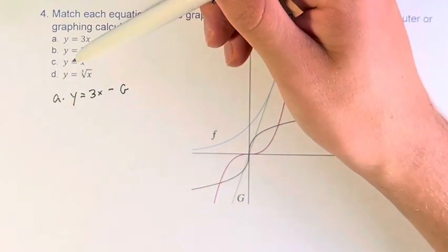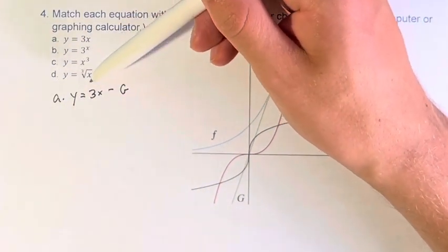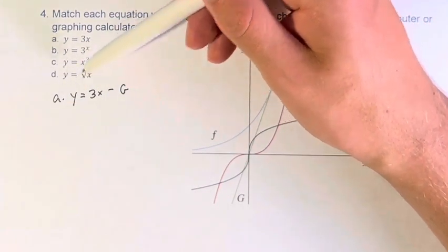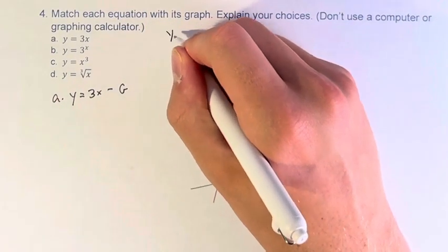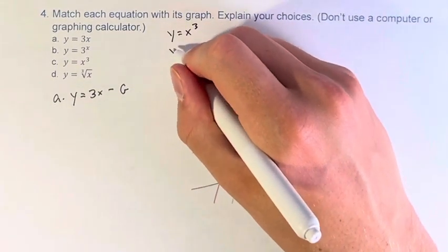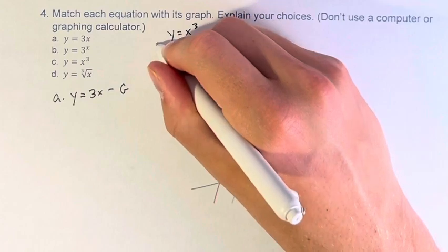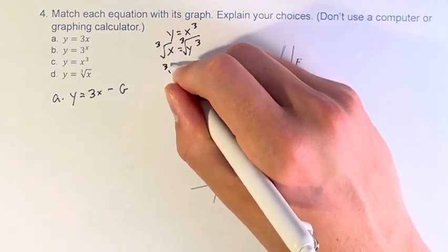Now between c and d, we have y equals x cubed and y equals the cube root of x. Now we can notice that these two things here are inverses of each other. So if we take y equals x cubed and we switch the variables and we solve for y, we get y is equal to the cube root of x, which is d.